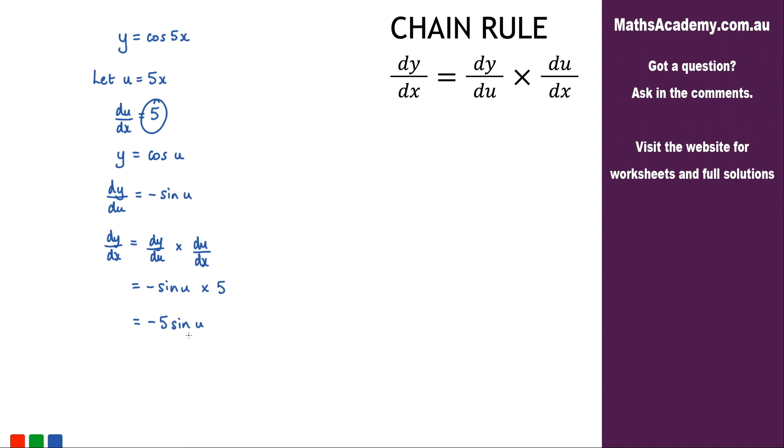Now the last step is to substitute back in for u and we can see up here that u is actually 5x. So let's pop that back in again.